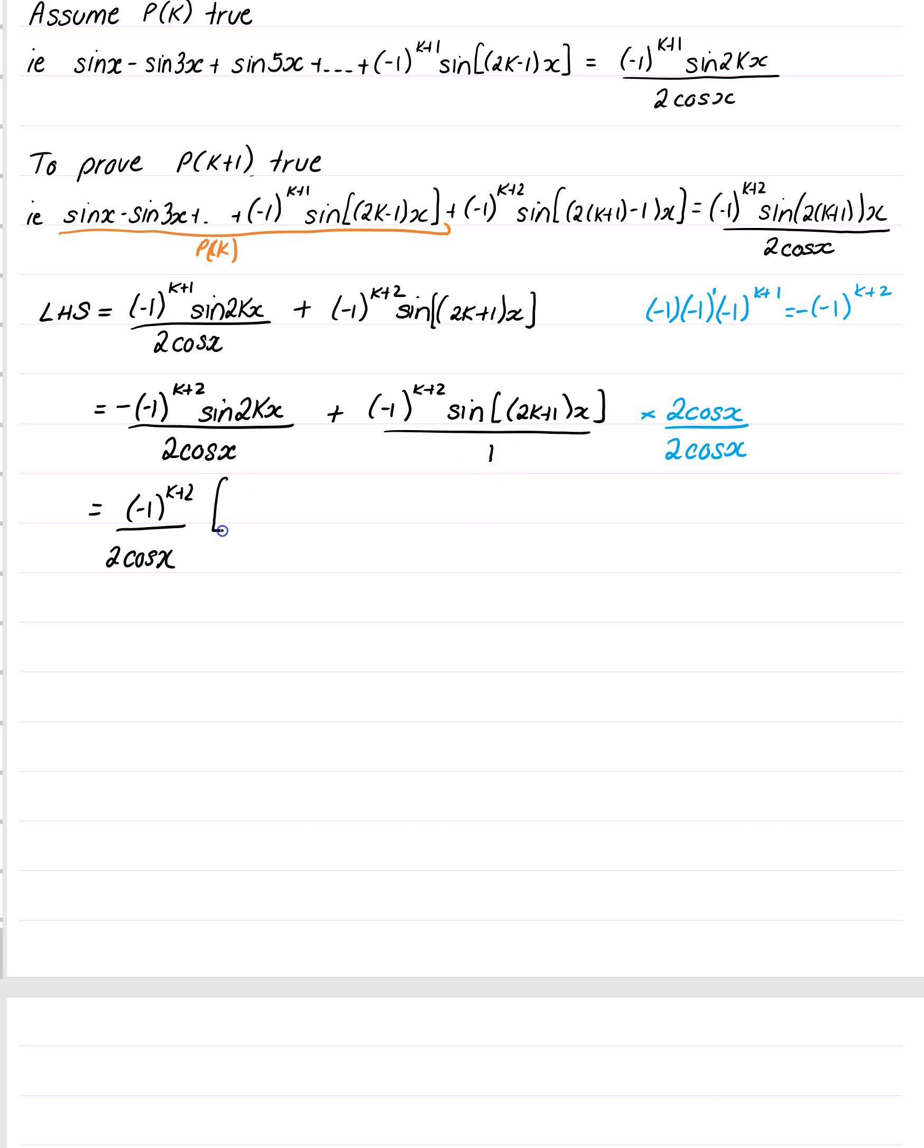We've got minus 1 to the k plus 2 all over 2 cos x because this is now downstairs. And what I'm left with is upstairs. I'm going to write this first. You'll see why soon. 2 times that to put the 2 in the front. 2 sin 2k plus 1 x. And it's also being times by cos x. And then I'm pulling out that factor here. So I'm left with minus sin 2k x.